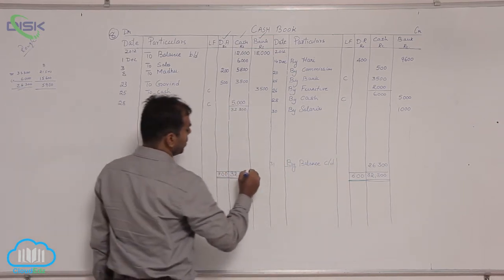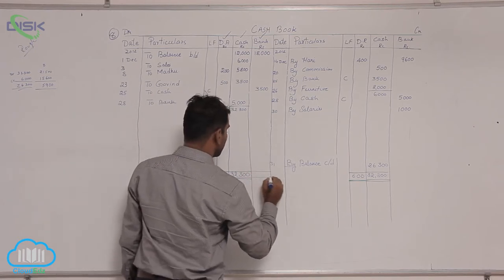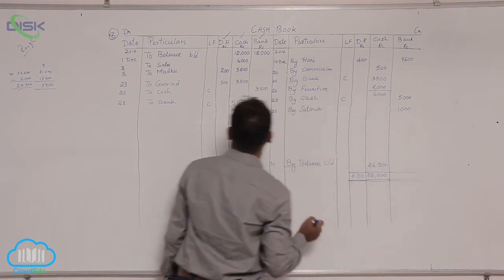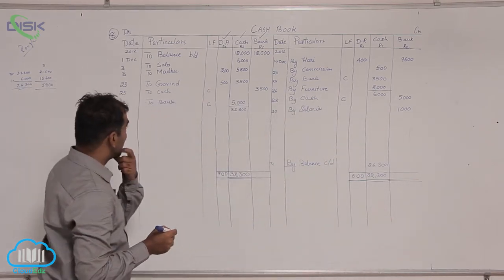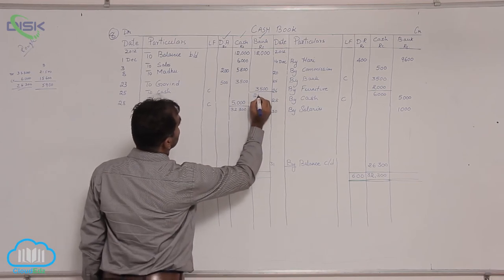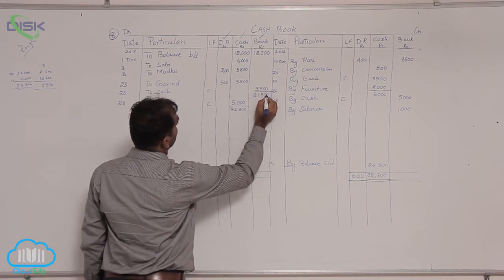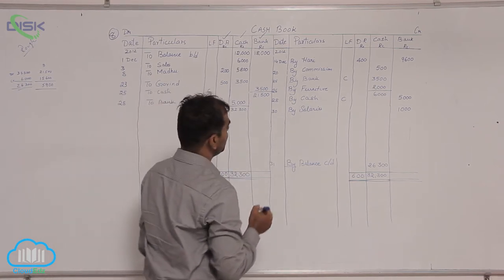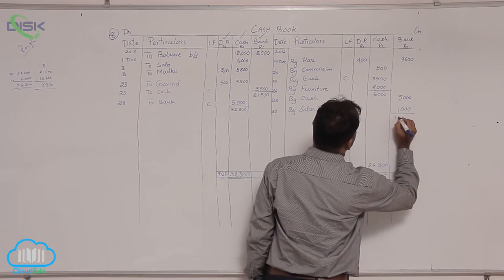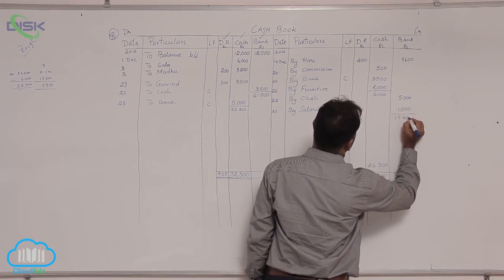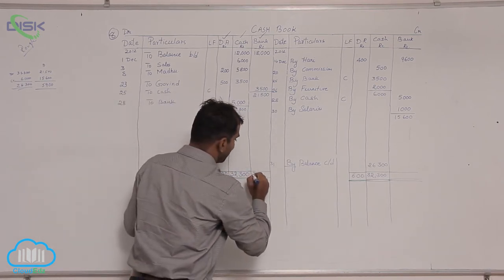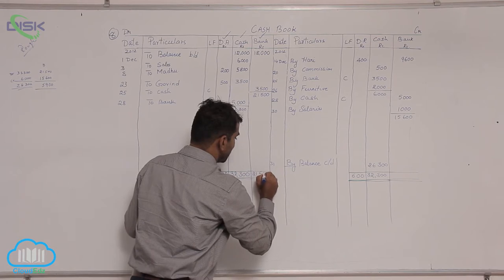In the same fashion, we are going to close our bank column. First check what are the totals on both the sides. On debit side our total is 21,500. If you see the credit side, the total comes to 15,600. In this case also the debit side total is more. You are entering 21,500 on both the sides.